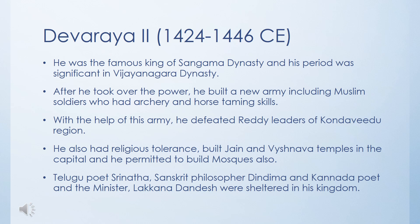Devaraya II was a famous king of the Sangamma dynasty. After taking power, he built a new army including Muslim soldiers who were very skilled at archery and horse taming. With the help of this army he defeated the Reddi leaders. He also practiced religious tolerance — he built temples for Jains and Vaishnavas in the capital and also permitted the building of mosques.